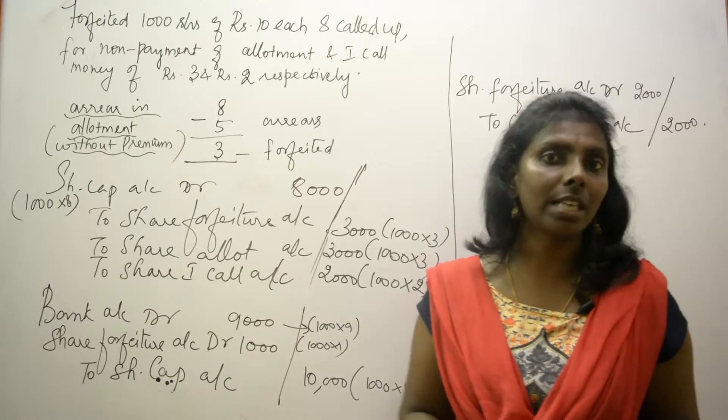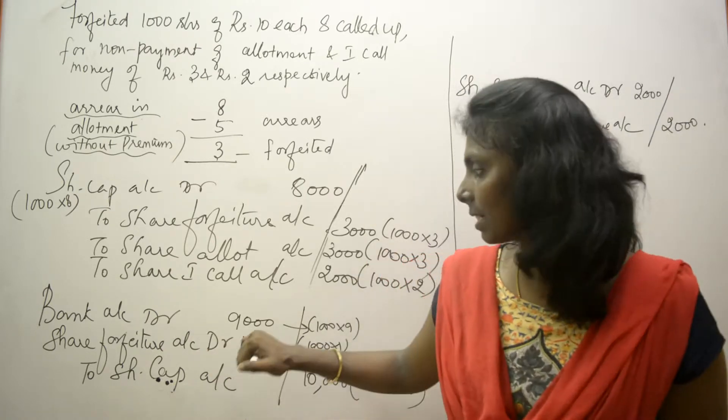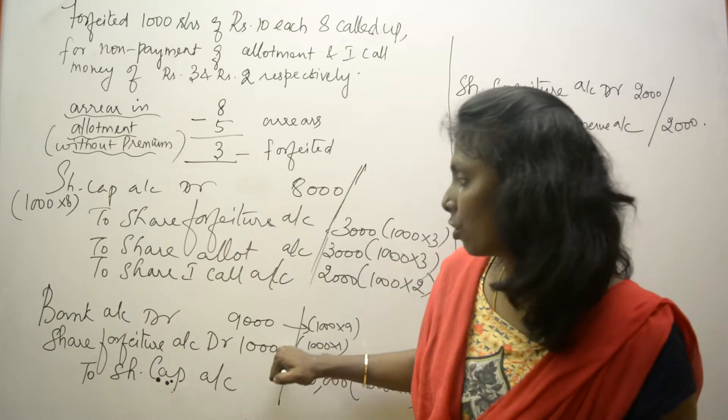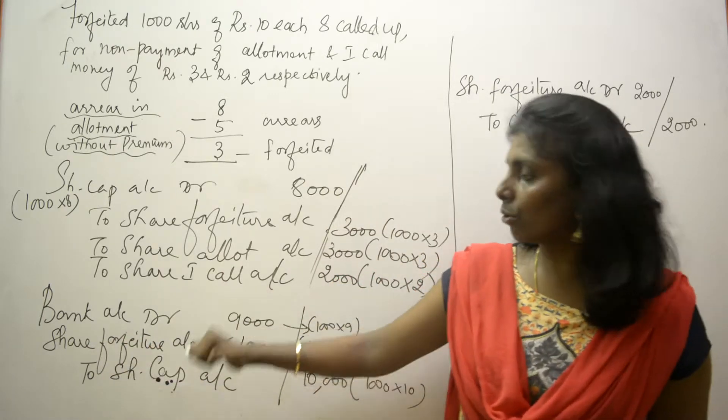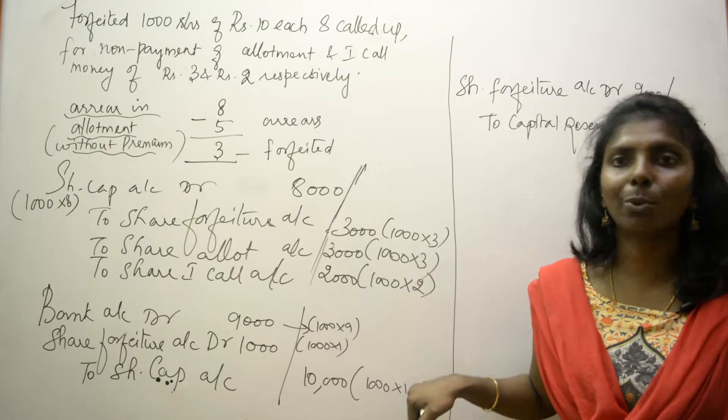So now I've reissued for 9, so it's 9000. 1 rupee is my reissue discount, so I get 1000 into 1, so I'm debiting share forfeiture account with that 1000 to share capital. Share capital is always credited with the total share value, which is 10 here, so I got 10,000.